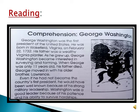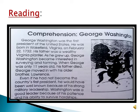Now we have to start our reading. I am going to start from the first paragraph — you have to read with me. George Washington was the first president of the United States. He was born in Wakefield, Virginia on February 22, 1732. His father was a wealthy Virginia planter. As he grew up, George Washington became interested in surveying and farming.